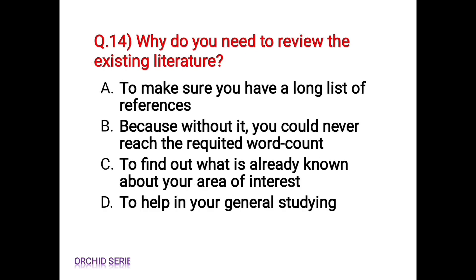Question 14: Why do you need to review the existing literature? Option A: To make sure you have a long list of references. Option B: Because without it, you could never reach the required word count. Option C: To find out what is already known about your area of interest. Option D: To help in your general studying. Options A, B, and D are not appropriate. The correct answer is Option C: To find out what is already known about your area of interest. We need to review existing literature to know what is already done in our research area.